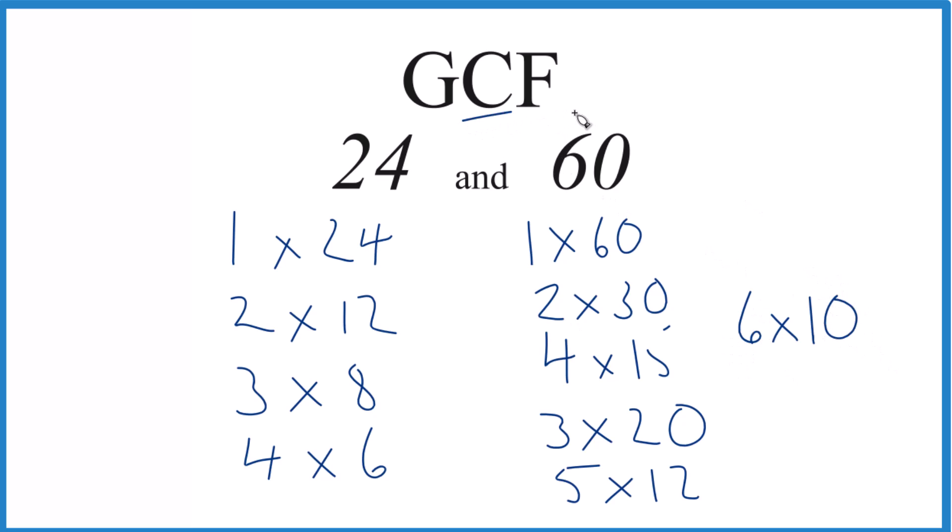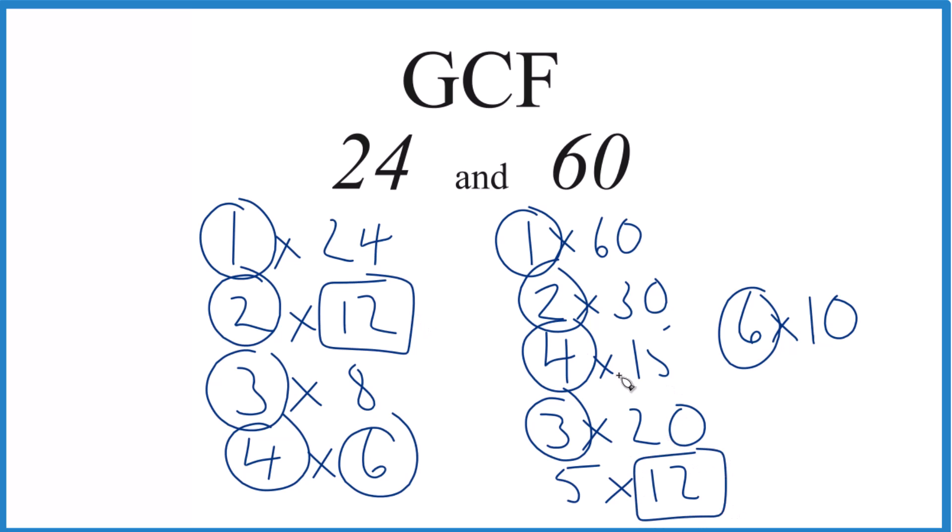So we have the factors, let's look at what we have in common. 1 goes into 24, 1 goes into 60. 2, 3 - yeah we have 3. 4, lots of them. Is there a 6? Yeah, 6. Is there an 8? Don't see an 8. But there is a 12, and it looks like 12 is the greatest number that goes into 24 and 60 evenly.